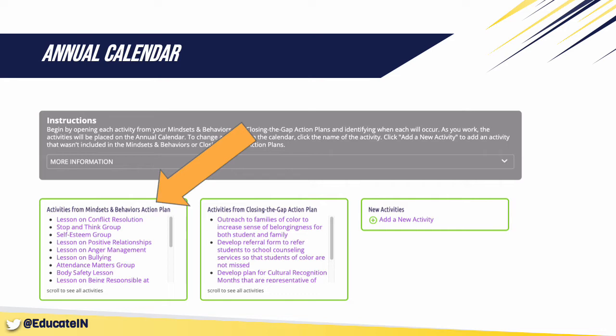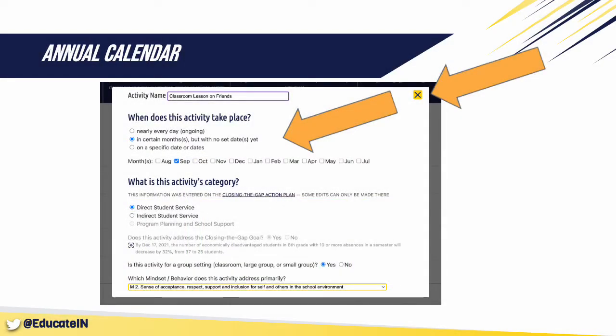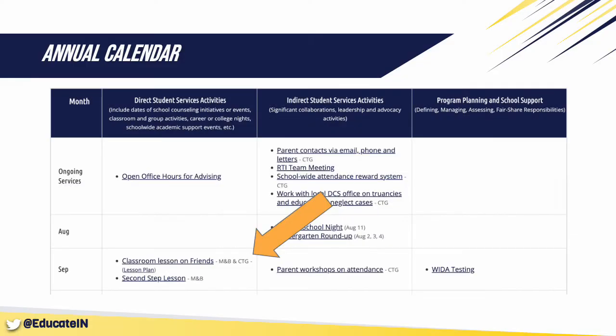Click on the first activity listed and a pop-up box will appear. Begin filling out the information for this particular activity and when you want it scheduled on your annual calendar. If you're not sure of a particular date, you can select a month or more than one month — these can all be changed later if your schedule changes. For the activities from your Mindsets and Behaviors Action Plan, you'll notice that the rest of the information has been automatically filled in for you. Once you've entered the information for when the activity will take place, close the pop-up window by clicking the X in the upper right-hand corner. You should now see your activity added to your calendar. Continue scheduling the rest of the activities from your Mindsets and Behaviors Action Plan.